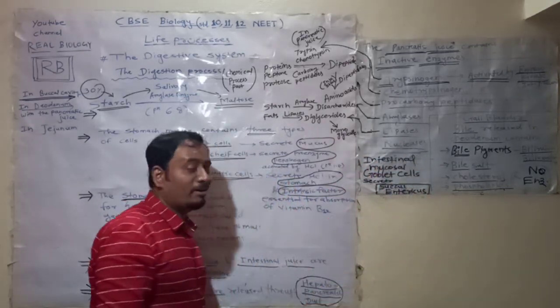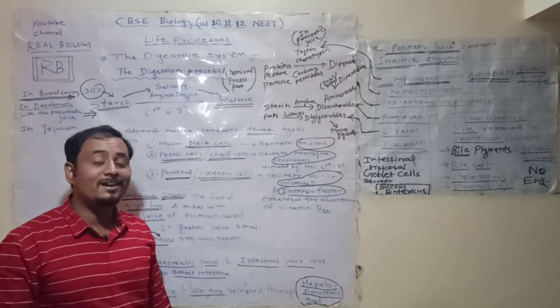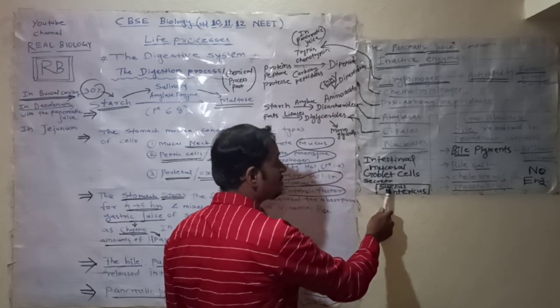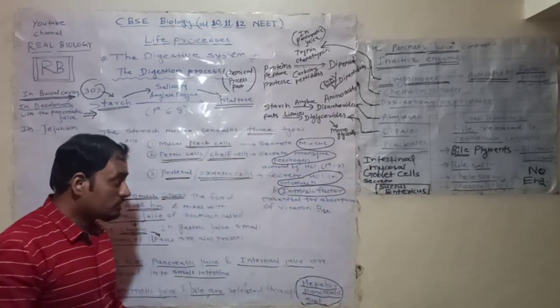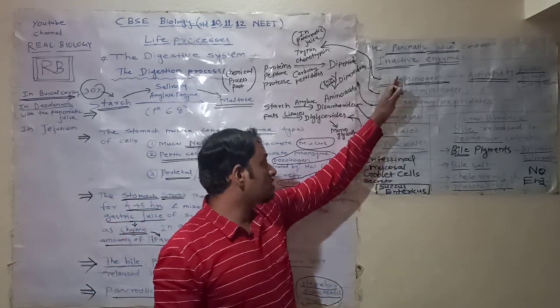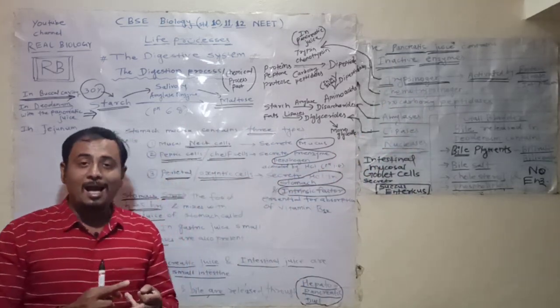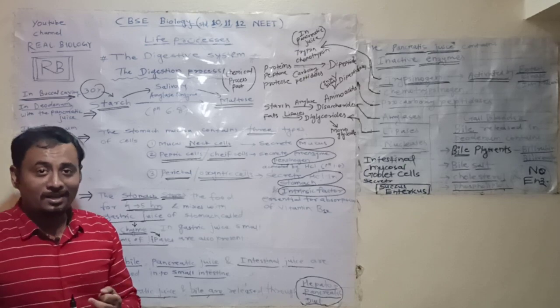Nucleases are responsible for digestion of nucleic acids into nucleotides and further into nucleosides. The intestinal mucosal goblet cells secrete succus entericus mucus which also releases these three kinds of enzymes: proteases, amylases, and nucleases.